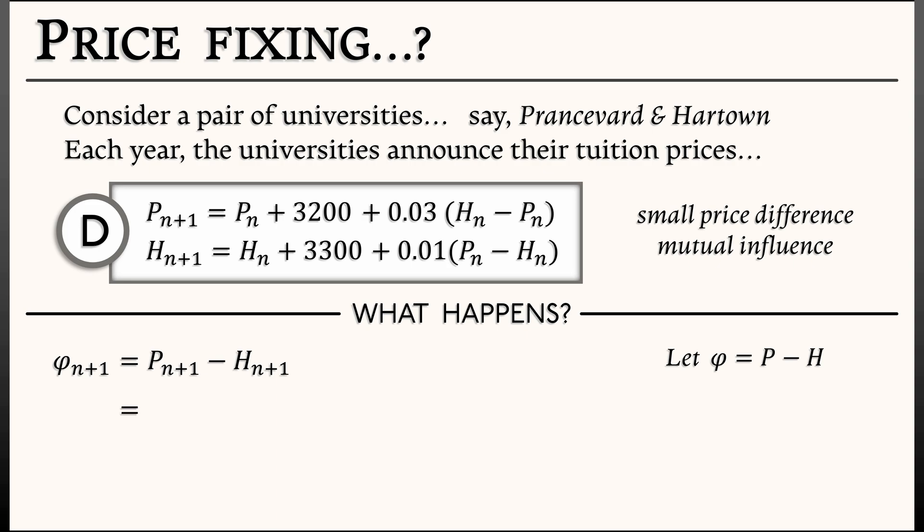We know that P n plus 1 is P n plus 3,200 minus 0.03 times phi n, because phi is P minus H. Then we subtract from this H n plus 1,